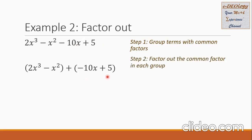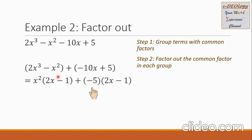In step 2, factor out the common factor in each group. The common in the first group is x squared. So I pull out x squared — what remains is 2x minus 1. In the second group, the common is 5, but I should write negative 5, so that the binomial will match the 2x minus 1 of the first group.